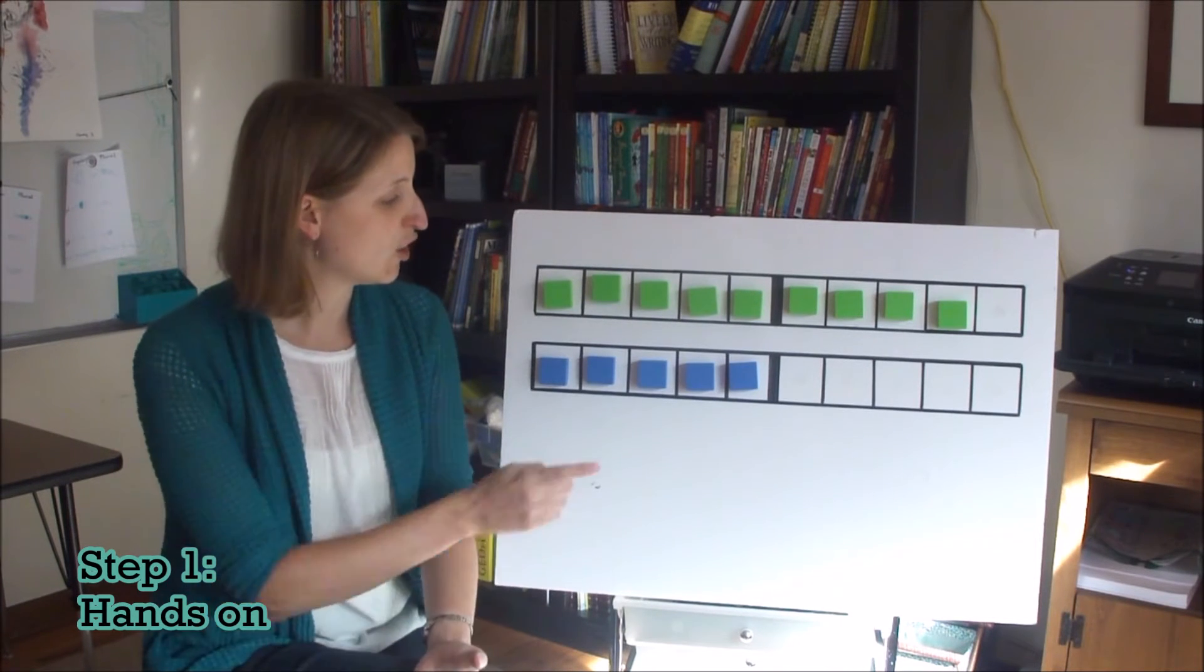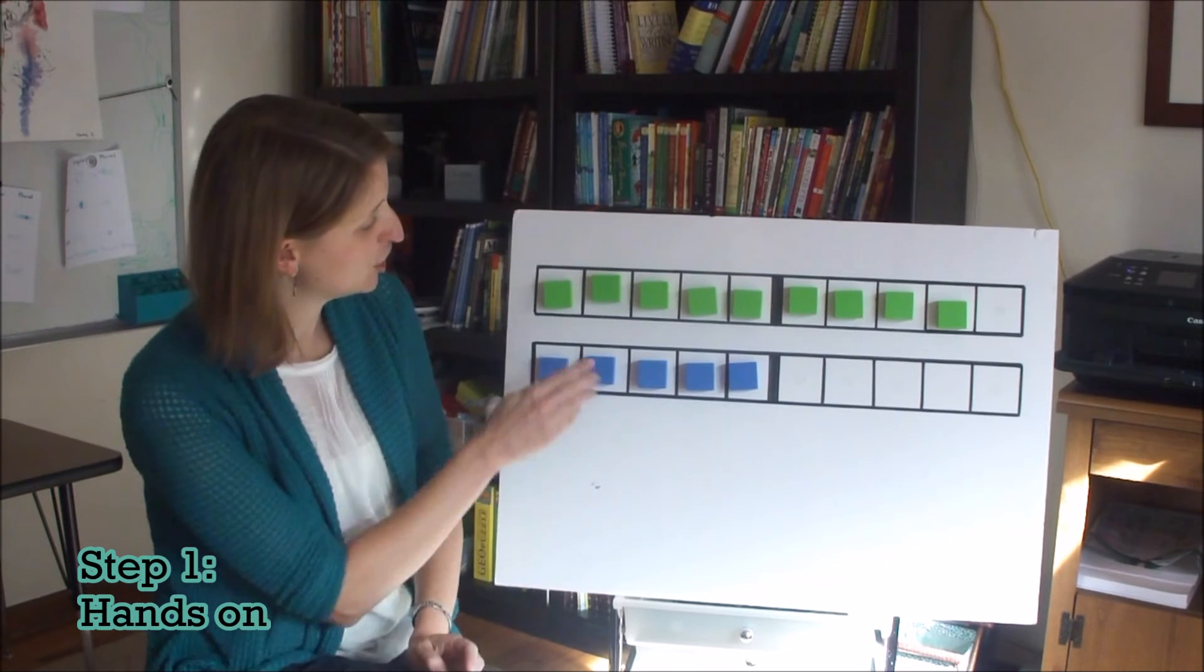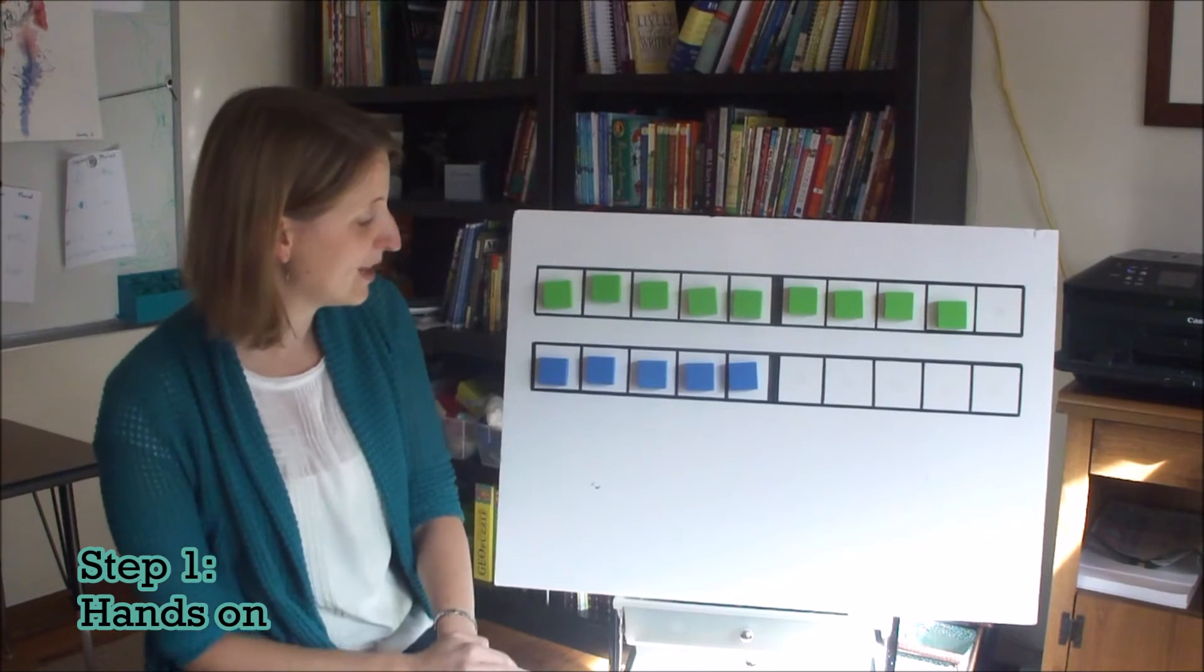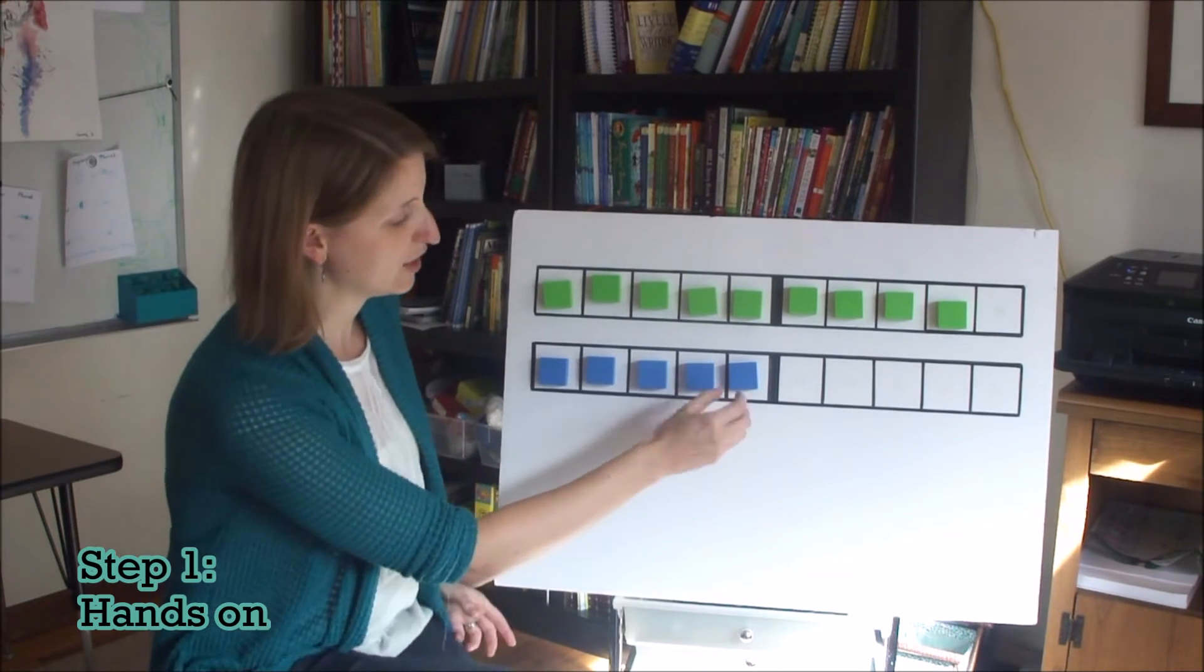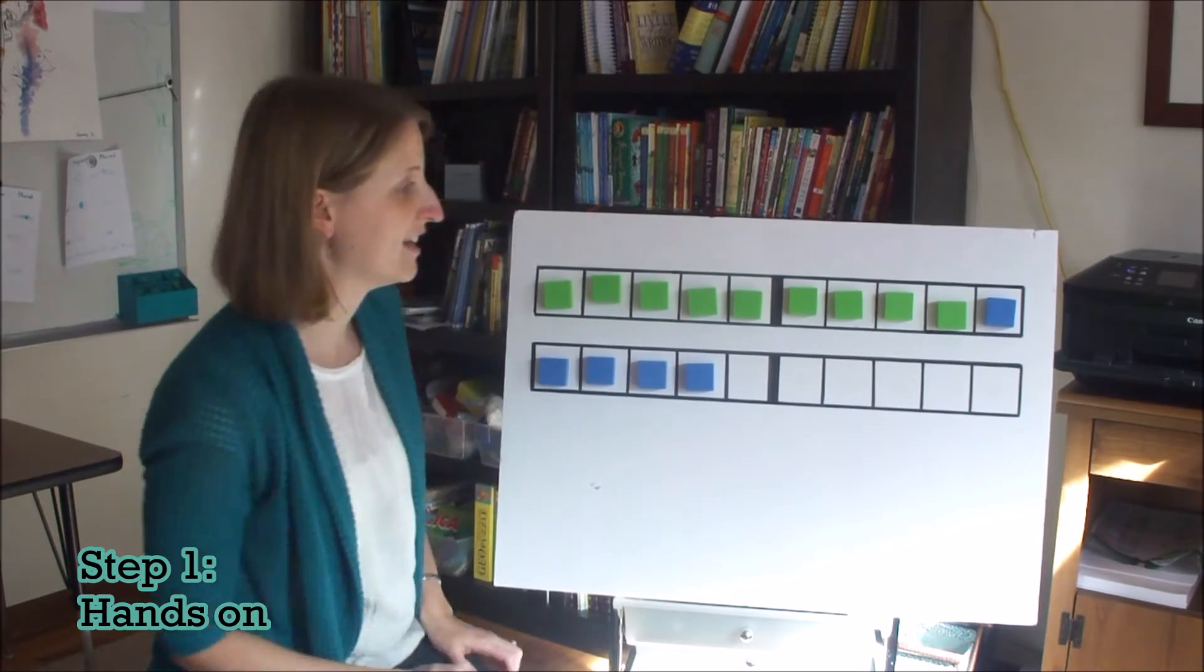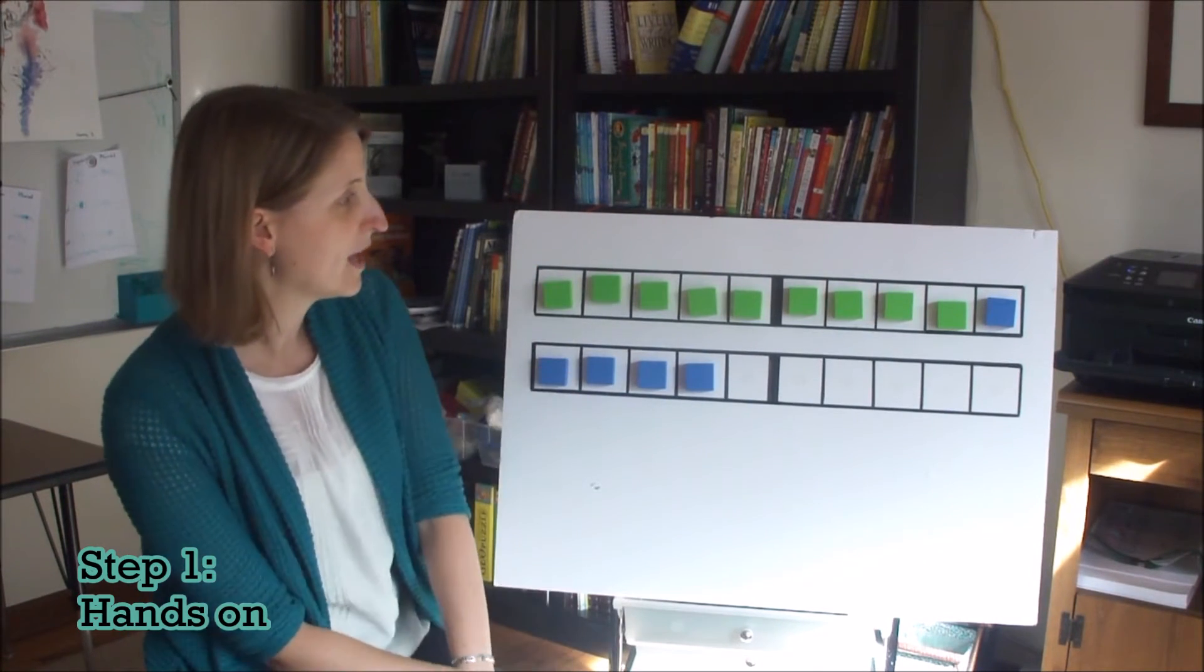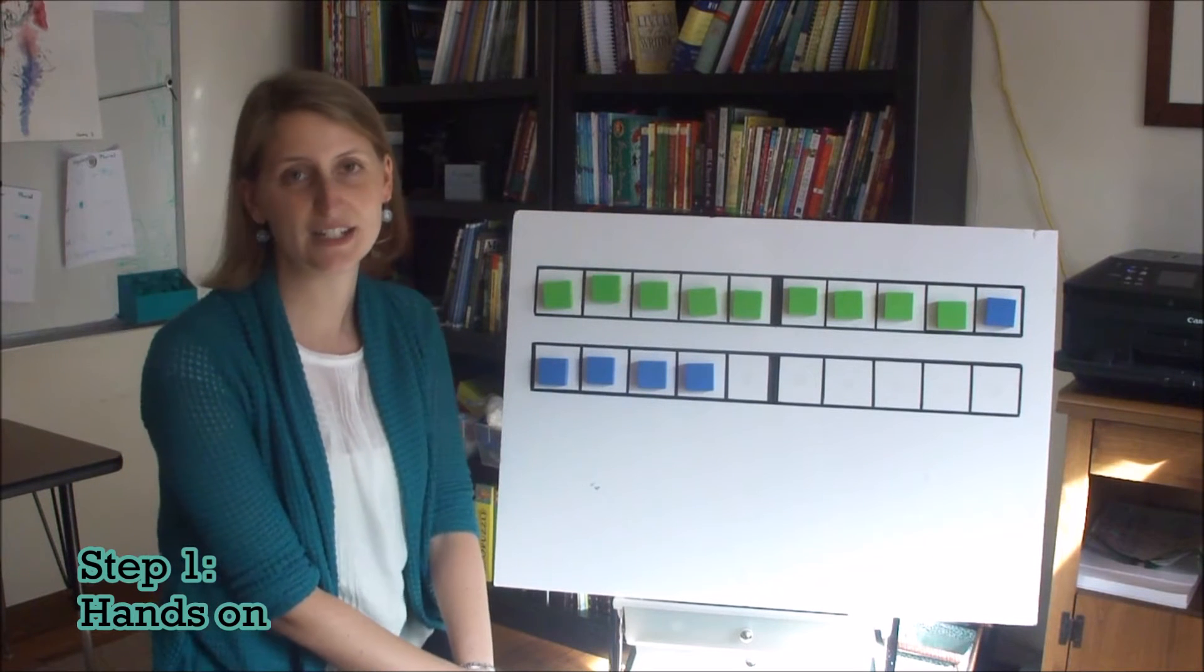When kids are adding on to 9, a great way to demonstrate that for them is to put 9 blocks on one 10 frame and 5 blocks on another 10 frame, and then to show them that they can just move one block over to fill in the 10. Now, instead of 9 plus 5, they have 10 plus 4, and so 9 plus 5 is 14.